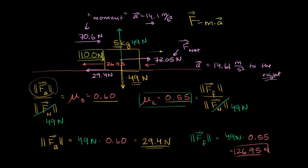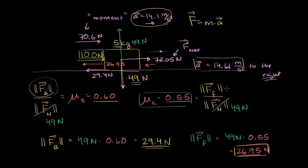To summarize: we always had enough force to budge the block. Right when we budge it, we overcome static friction and have a brief acceleration of 14.1 meters per second squared. Once it's moving, kinetic friction is lower, the net force increases slightly, and we accelerate at 14.61 meters per second squared — a slightly faster rate. The transition from static to kinetic friction means the friction force drops and acceleration increases as soon as the block starts moving.